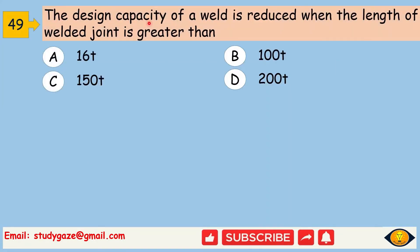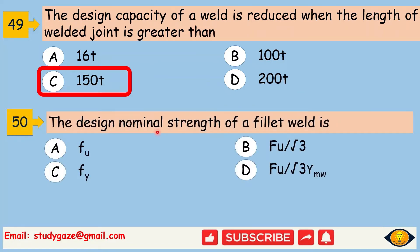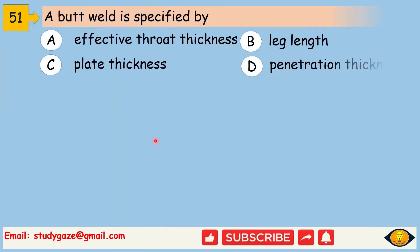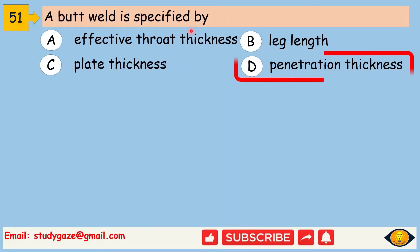The design capacity of a weld is reduced when the length of the welded joint is greater than 150T. Next, the design nominal strength of a fillet weld is Fu divided by root 3. Next, a butt weld is specified by penetration thickness.